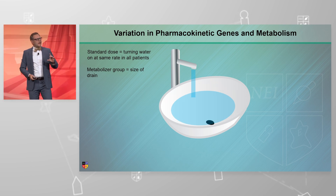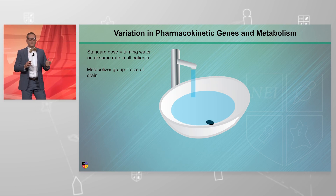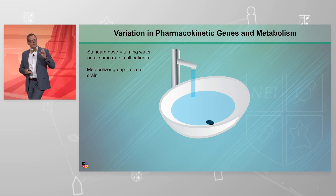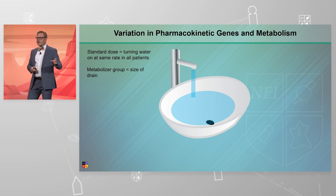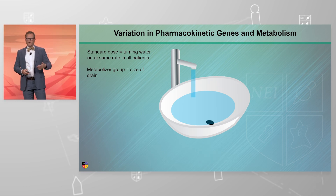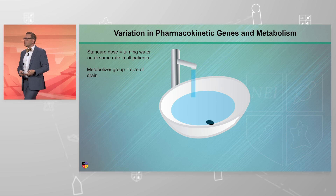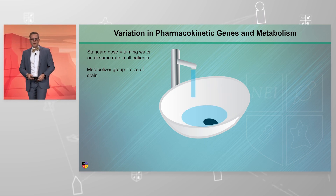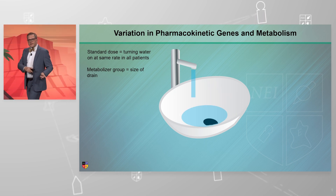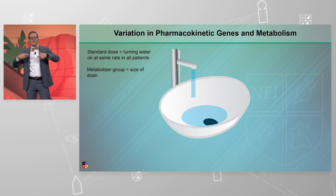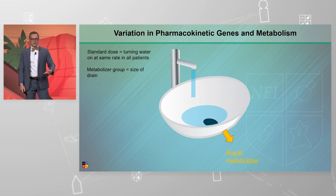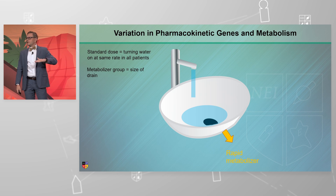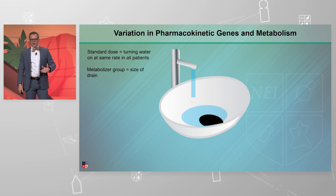We can finally have the Goldilocks scenario where everything is just right — the normal size drain and the standard rate at which we've turned on the water — and we get a normal, expected, appropriate level in the bathtub. We can then have an increased size of the drain, faster clearance, and as expected, we would have a lower blood level.